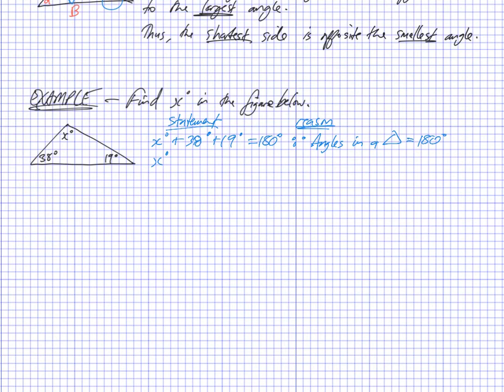So now I can simplify this by adding those two numbers. 38 degrees, 38 plus 19. So you've got X plus 57 degrees is equal to 180. And I need to use some algebra. I want to get rid of this, add 57. What's the opposite of adding 57? Taking 57.